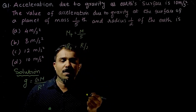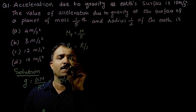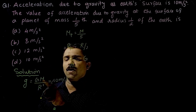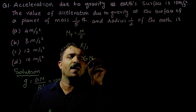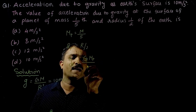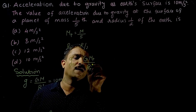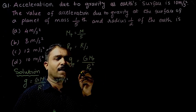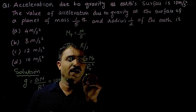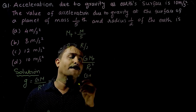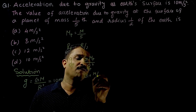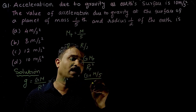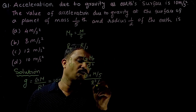The expression for the acceleration due to gravity of the planet is gp = G·mp / rp². Substituting the values of mp and rp: gp = G·(M/5) / (R/2)², and (R/2)² equals R²/4.